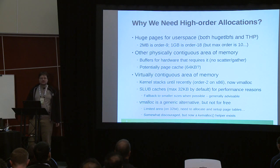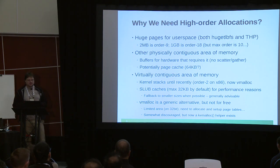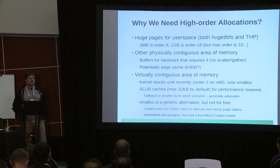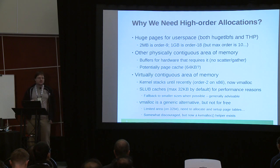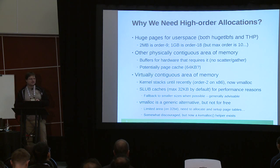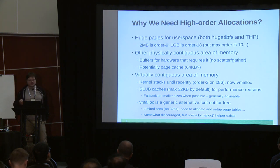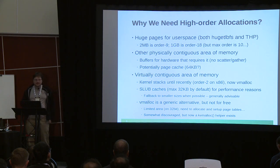Why do you actually need these so-called high-order allocations, meaning more than the 4KB order-zero? We had the discussion about huge pages yesterday — user space wants huge pages: transparent huge pages or hugetlbfs. In the case of x86, the huge page size is 2MB, which is order 9 in this scheme. One gigabyte would be order 18, but the maximum we support is order 10, so gigantic huge pages have to be allocated with something similar to CMA, which I won't go into detail about, but CMA has many of the problems I'll explain later.